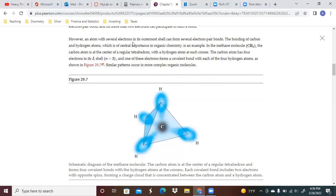Thus, opposite spins are an essential requirement for an electron pair bond, and no more than two electrons can participate in that. However, an atom with several electrons in its outermost shell can form several electron pair bonds. The bonding of carbon and hydrogen atoms is organic chemistry, an example.